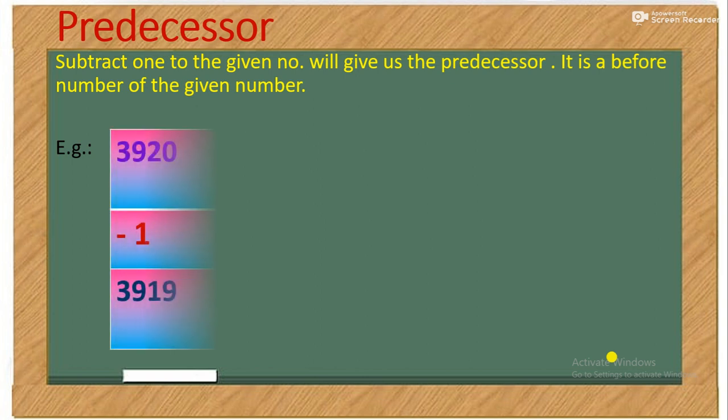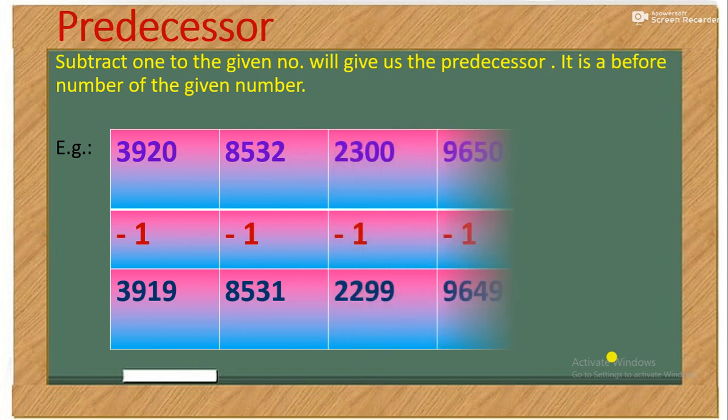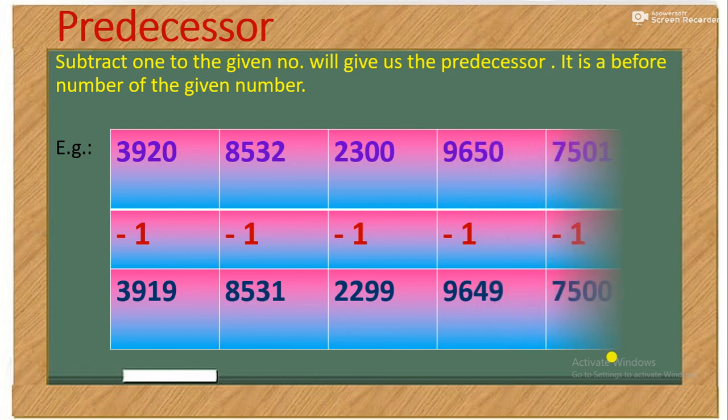minus 1 equals 3919. 8532 minus 1 equals 8531. 2300 minus 1 equals 2299. 9650 minus 1 equals 9649. 7501